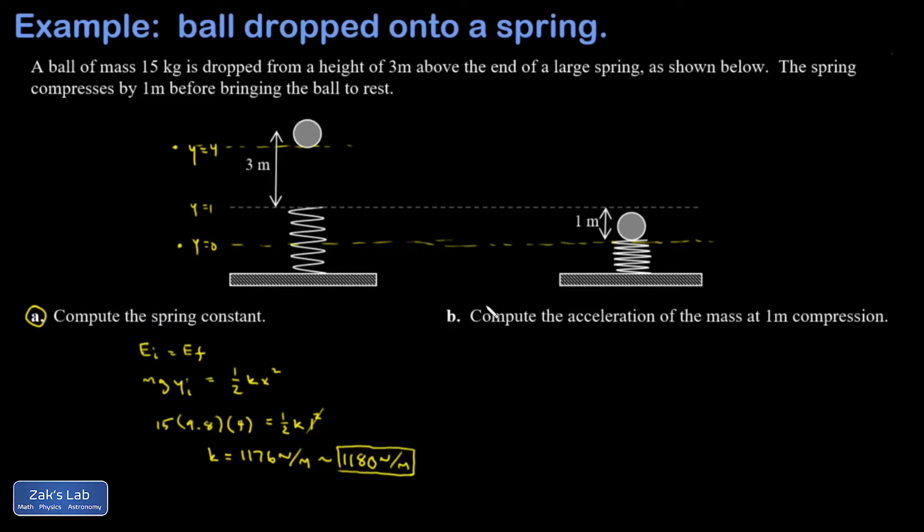All right, part B: compute the acceleration of the mass at this moment. So the important thing here is to not forget that gravity is still pulling down. I have a compressed spring pushing up, but I also have gravity pulling down. So just getting some force vectors in here, there's gravity pulling down. I'll go ahead and get a number on this right now: that's 15 kilograms, 9.8 meters per second squared, that's 147 newtons.